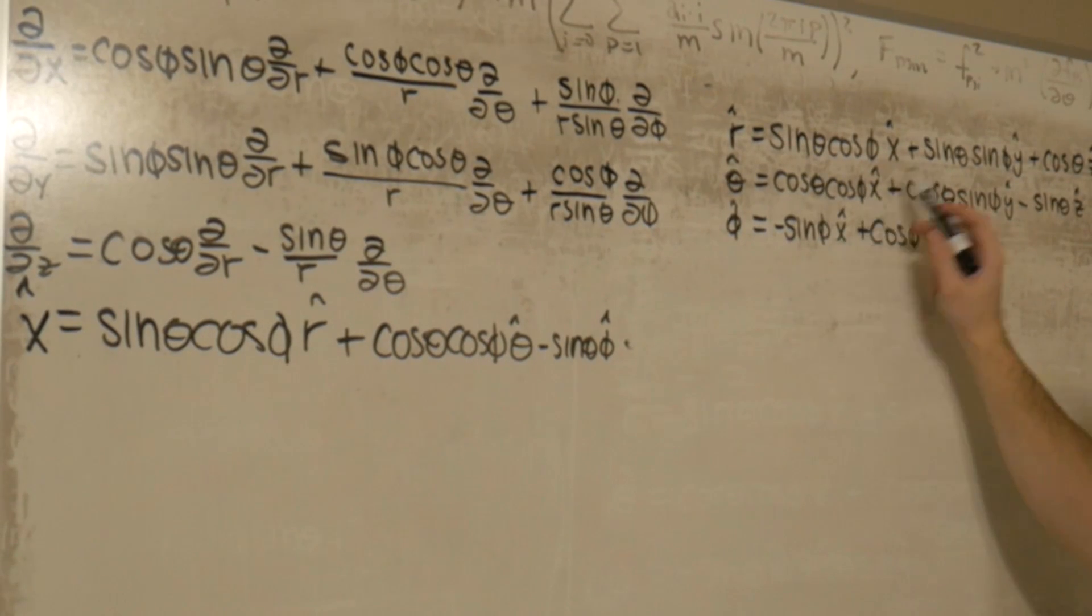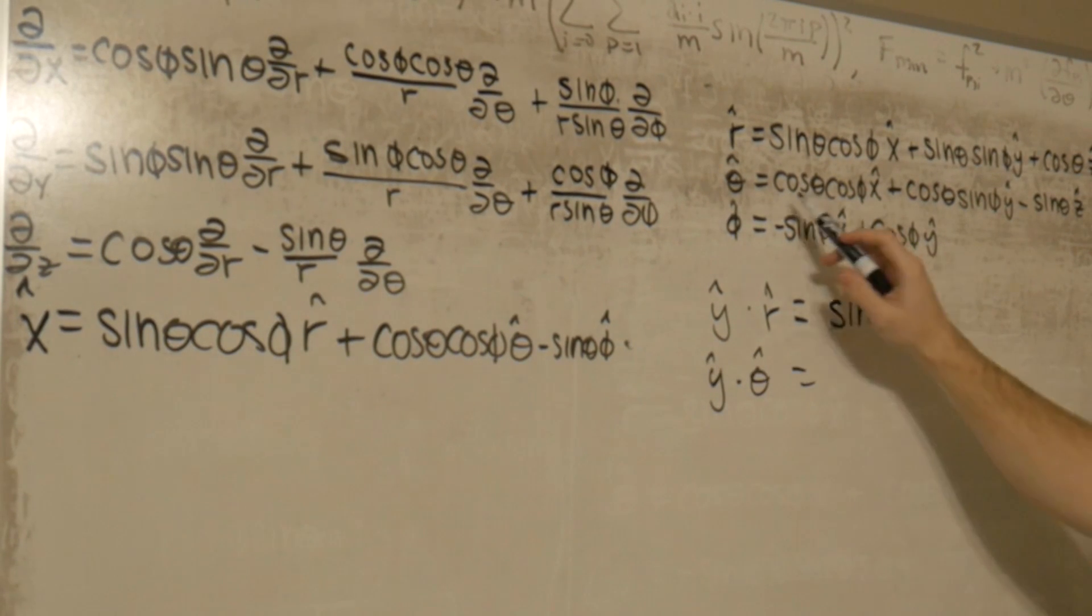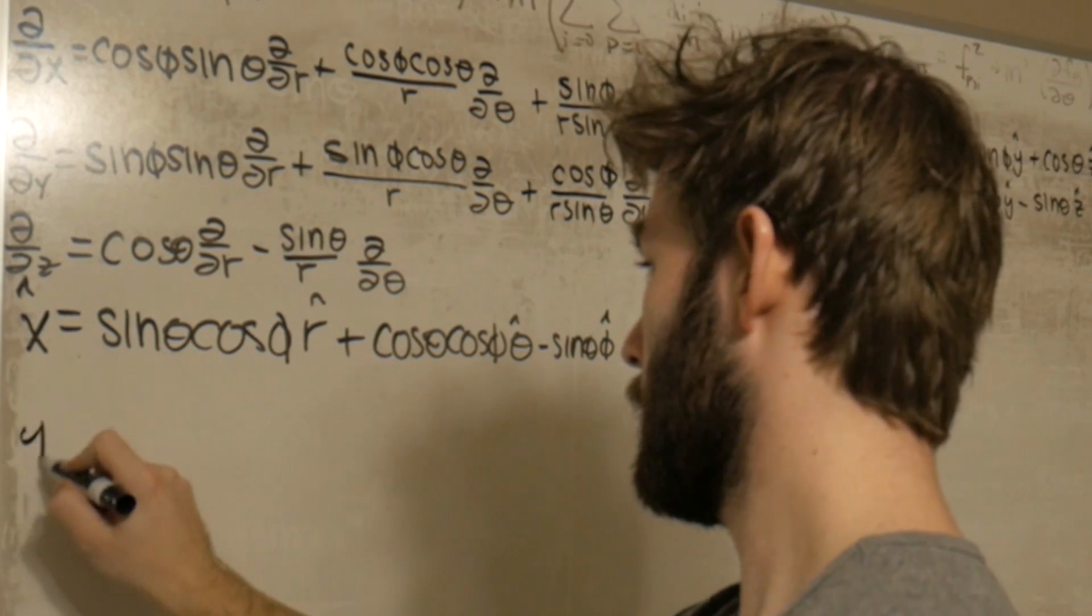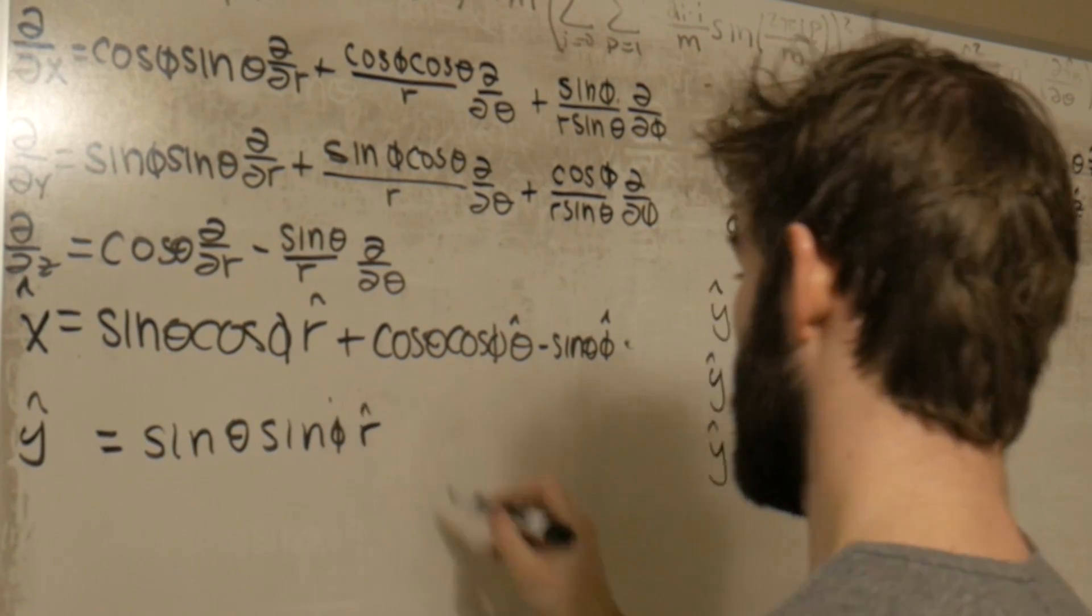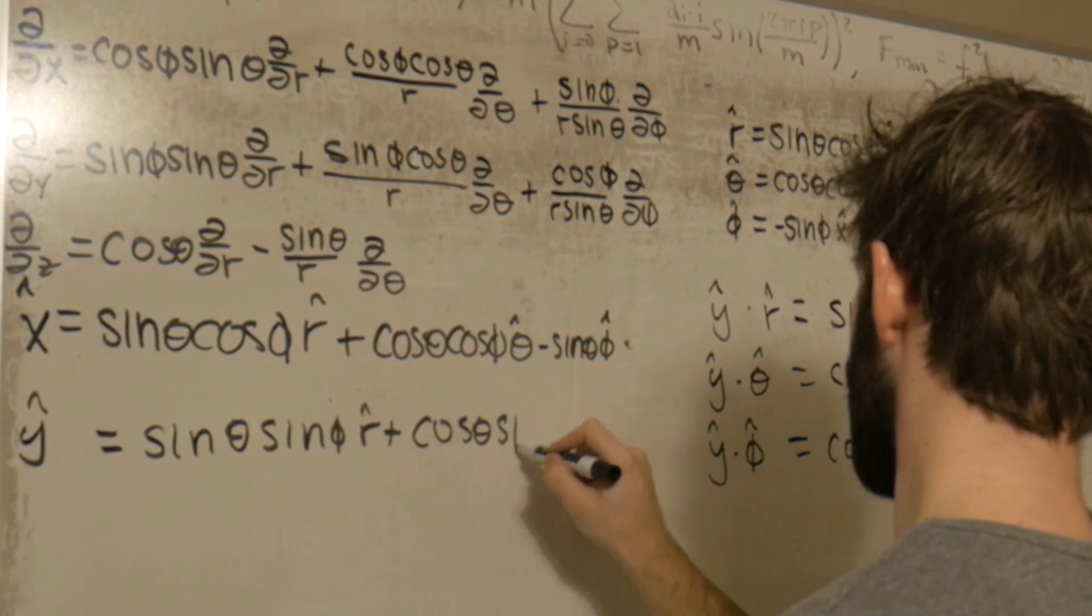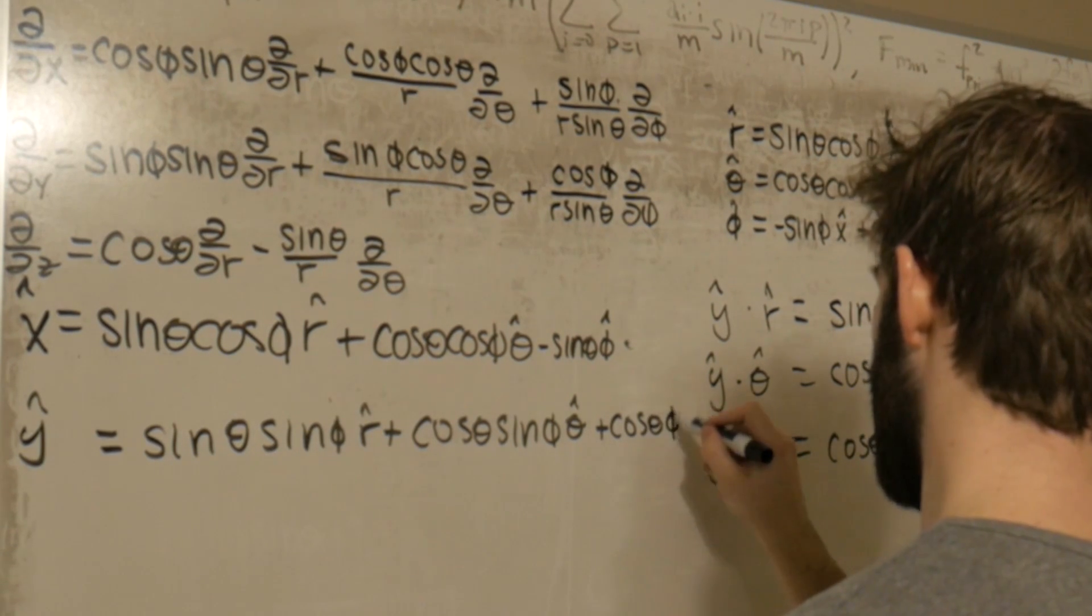All right, so let's go ahead and take the dot product with y hat in these unit vectors. Y hat dot r hat, the only thing that's going to survive is the y hat term, which is going to give us sine theta sine phi. Y hat dot theta hat is just going to give us cosine theta sine phi. And y hat dot phi is just going to give us cosine phi. And what we get here is that y hat is equal to sine theta sine phi r hat plus cosine theta sine phi theta hat plus cosine phi phi hat.